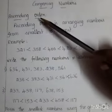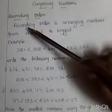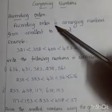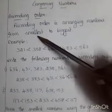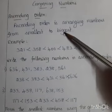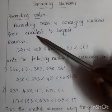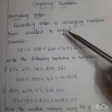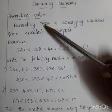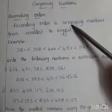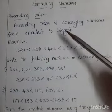Ascending order. Ascending order means eruvarse. Ascending order is arranging numbers from smallest to biggest. Smallest means engalai oppitthal. So what is ascending order? Ascending order is arranging numbers from smallest to biggest.